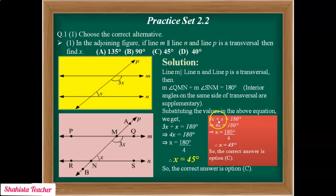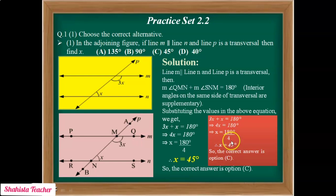So here, 3X plus X equals 180. So 4X equals 180. X equals 180 divided by 4, which gives us 45 degrees. The correct option is 45 degrees. In this way we finish Practice Set 2.2, question number 1, sub-question 1. Next, we will solve question number 1, sub-question 2.